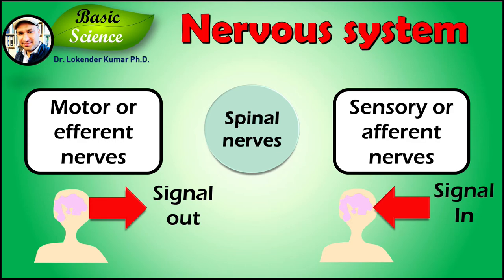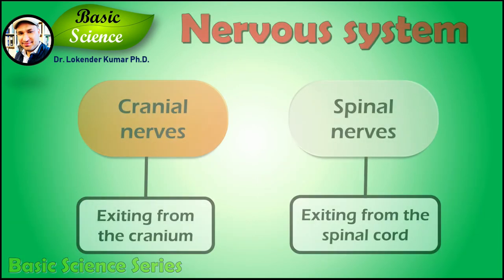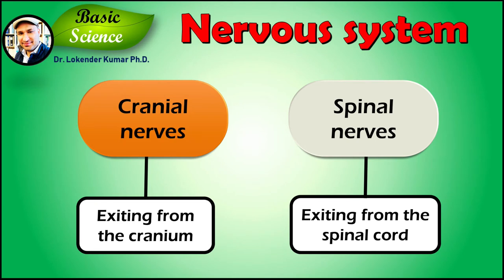Spinal nerves serve both functions and are called mixed nerves. The peripheral nervous system is divided into three separate subsystems: the somatic nervous system, the autonomic nervous system, and the enteric nervous system. Somatic nerves mediate voluntary movement. The autonomic nervous system is further divided into the sympathetic and the parasympathetic nervous systems. The sympathetic nervous system is activated in cases of emergencies to mobilize energy, while the parasympathetic nervous system is activated when organisms are in a relaxed state. The enteric nervous system functions to control the gastrointestinal system. Both the autonomic and enteric nervous systems function involuntarily. Nerves that exit from the cranium are called cranial nerves, while those exiting from the spinal cord are called spinal nerves.